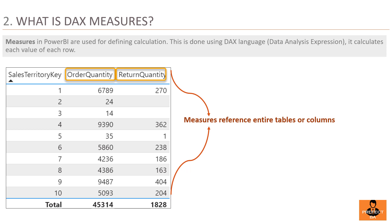Question 2: What are DAX measures in Power BI? Measures in Power BI are used for defining calculations. This is done using DAX language — Data Analysis Expressions. It calculates each value for each row. Generally, measures are evaluated based on filter context, which means they recalculate when the fields or filters around them change, like when new row or column labels are pulled into a matrix or whenever new filters are applied. In the example above, order quantity and return quantity are measures in the territory table. Measure values are not visible within tables — they can only be seen in visualizations like a chart, matrix or table.